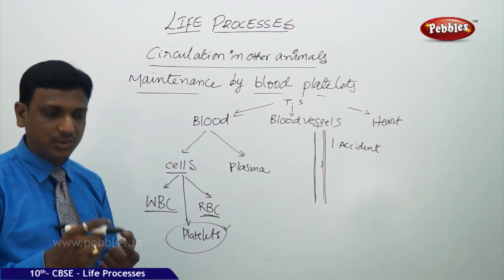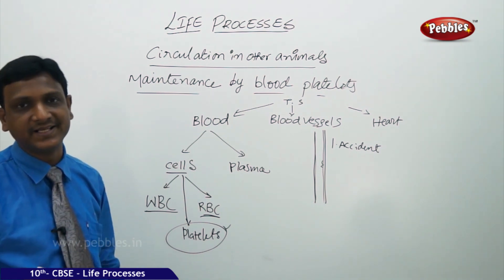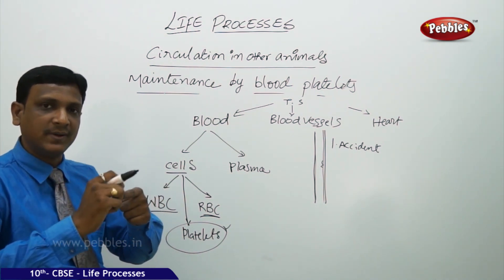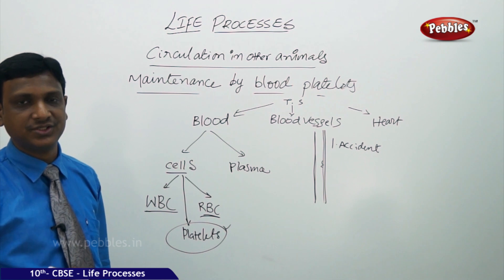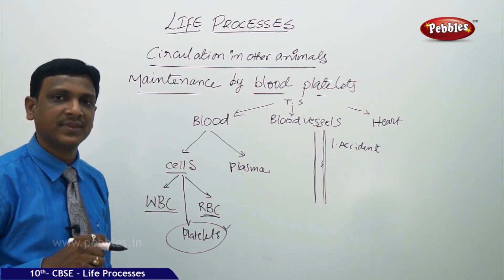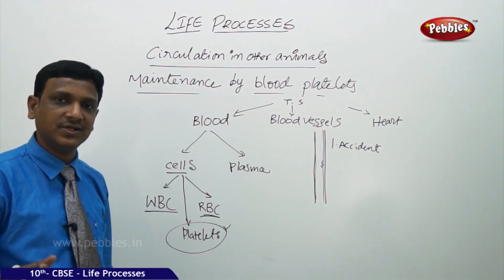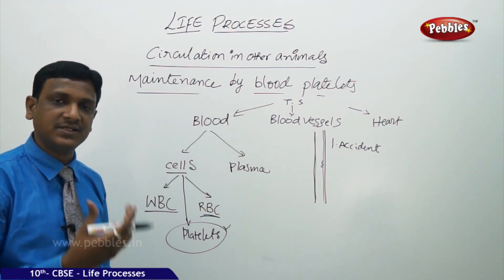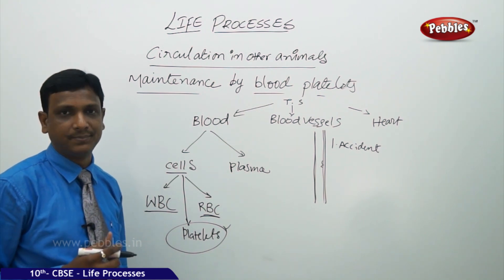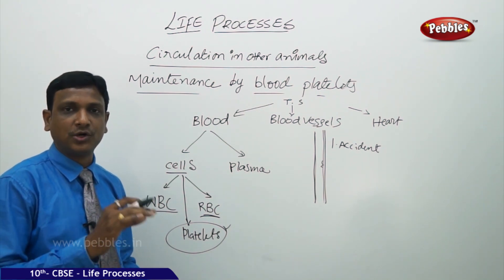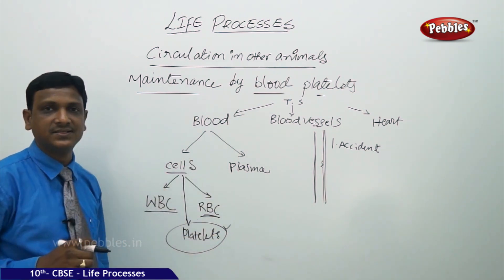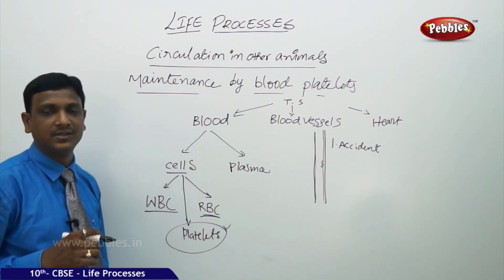Then what happens? You see blood coming out — bleeding takes place. You have cut your finger, meaning your blood vessels are cut and damaged. Then the blood flows out from your circulatory system. If it happens continuously and you lose all the blood present in your body, the person will die. But it doesn't happen — the bleeding stops automatically after some time.